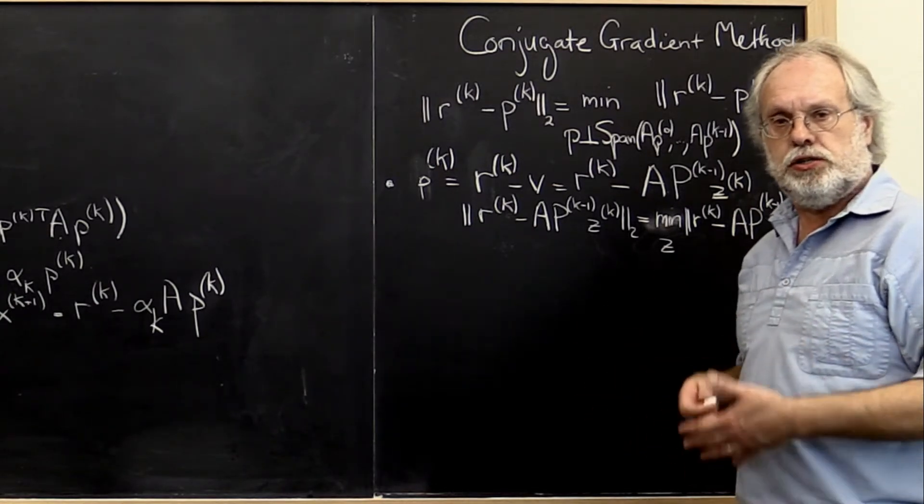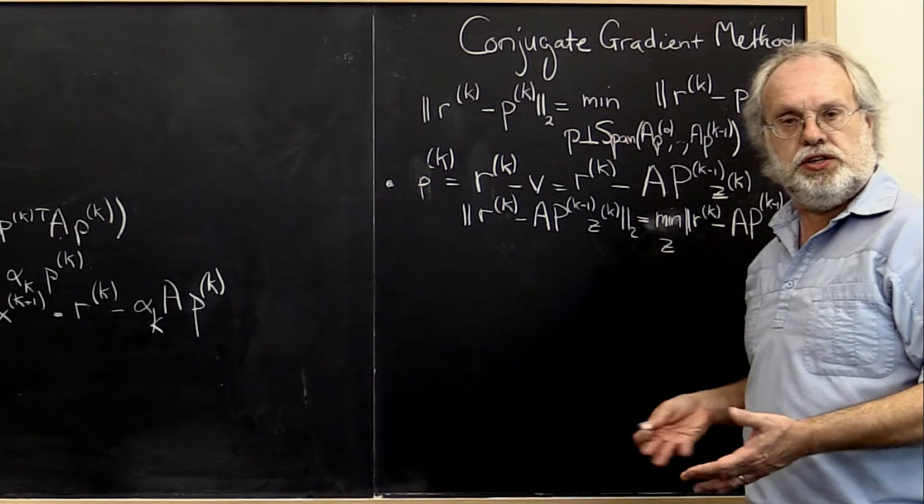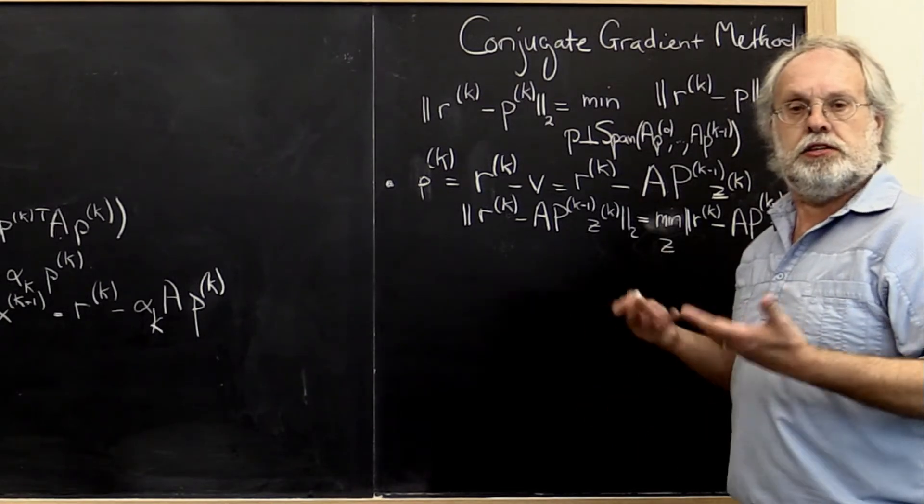Do we do normal equations? Do we use QR factorization? All of these methods are expensive.